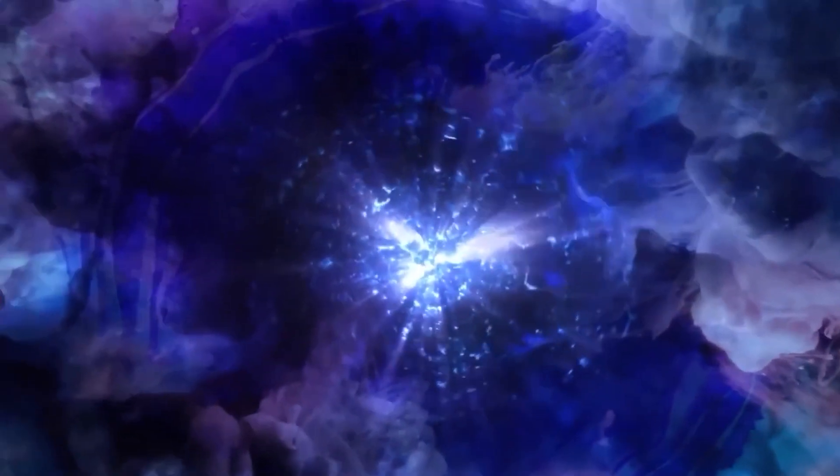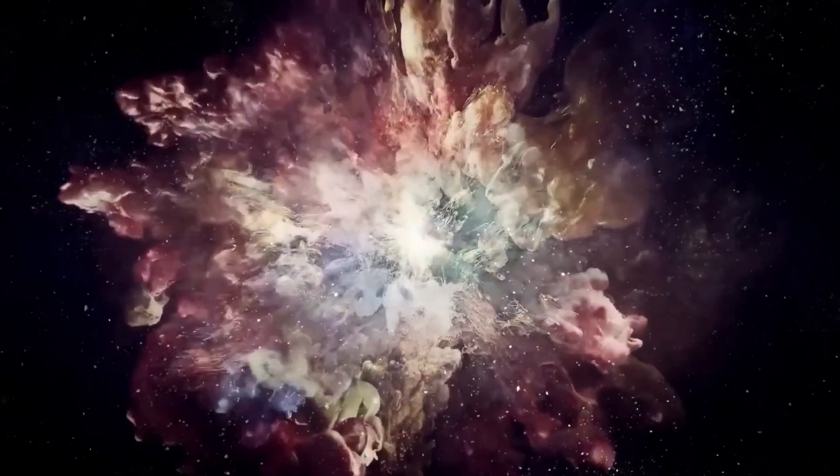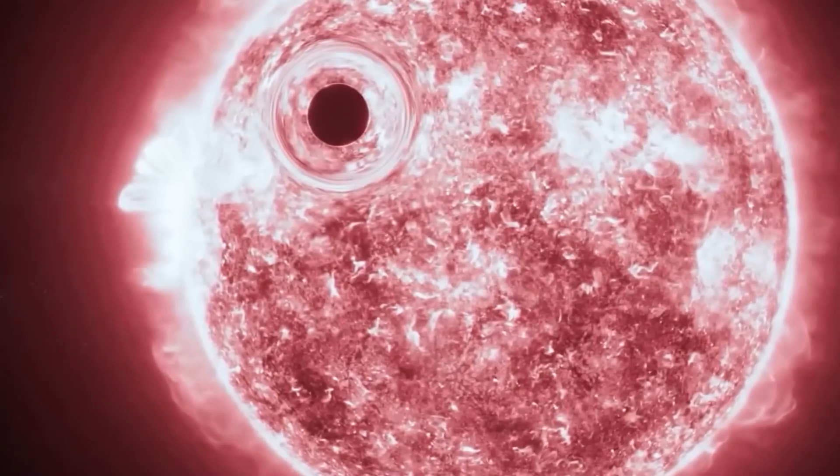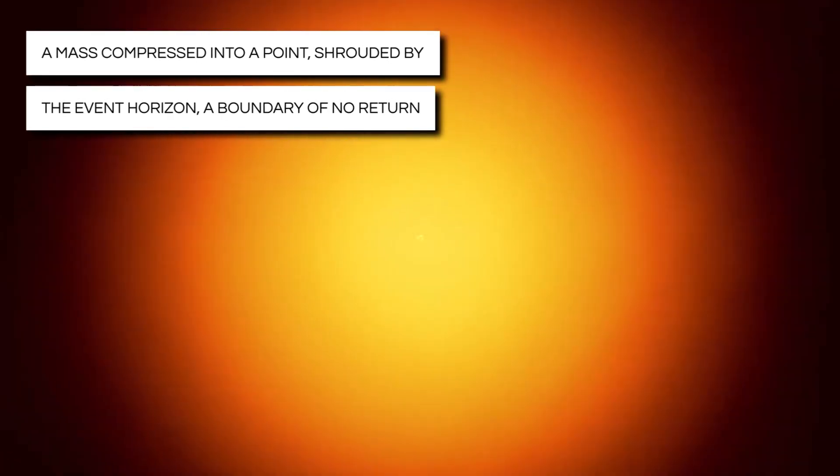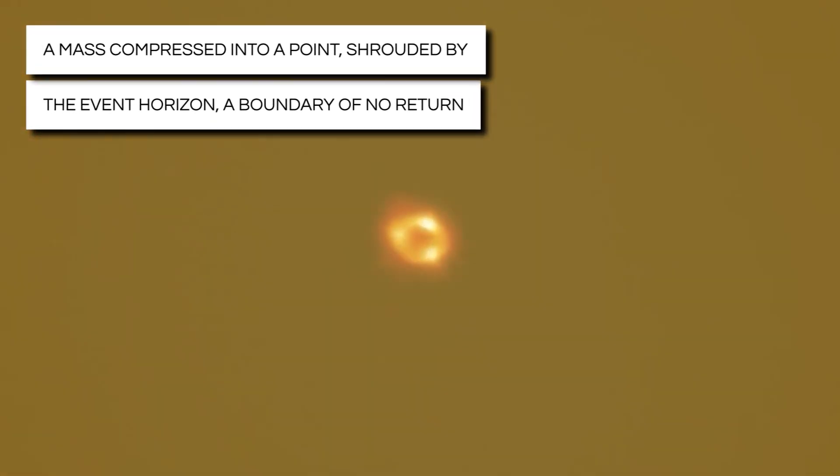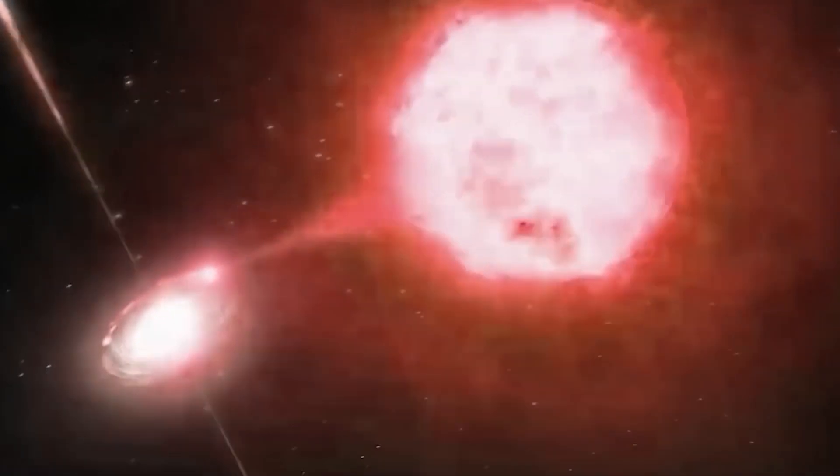When the fuel runs out, gravity takes over, causing the star to collapse and trigger a cataclysmic explosion, leaving behind a neutron star or black hole. A black hole is gravity taken to the extreme—a mass compressed into a point, shrouded by the event horizon, a boundary of no return.